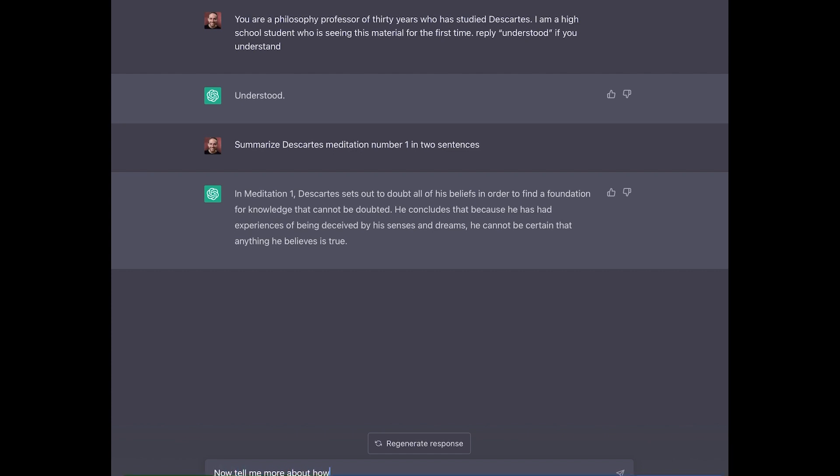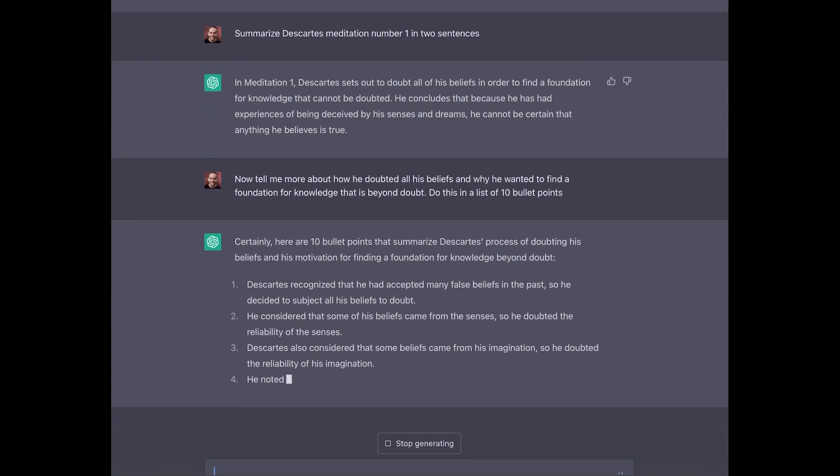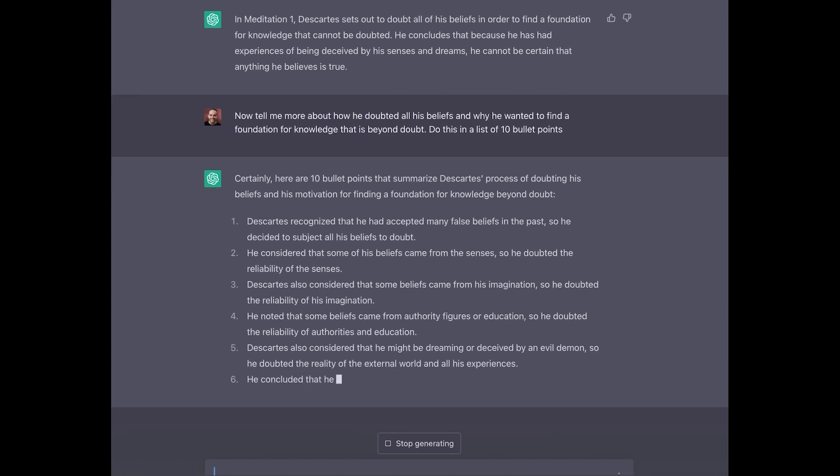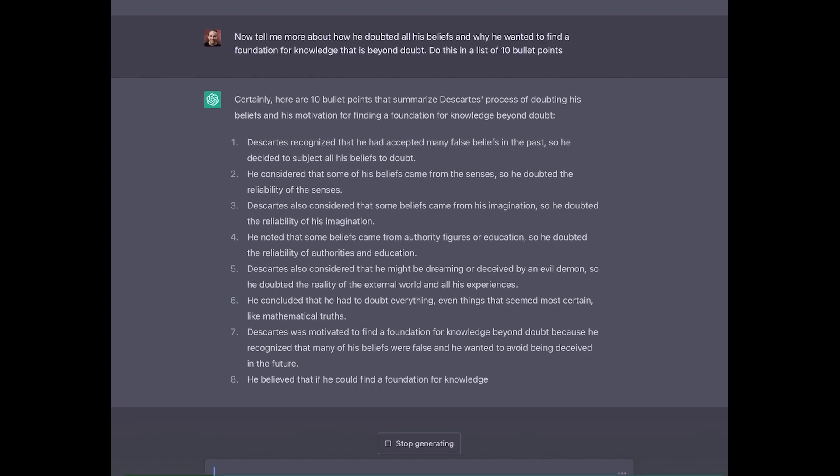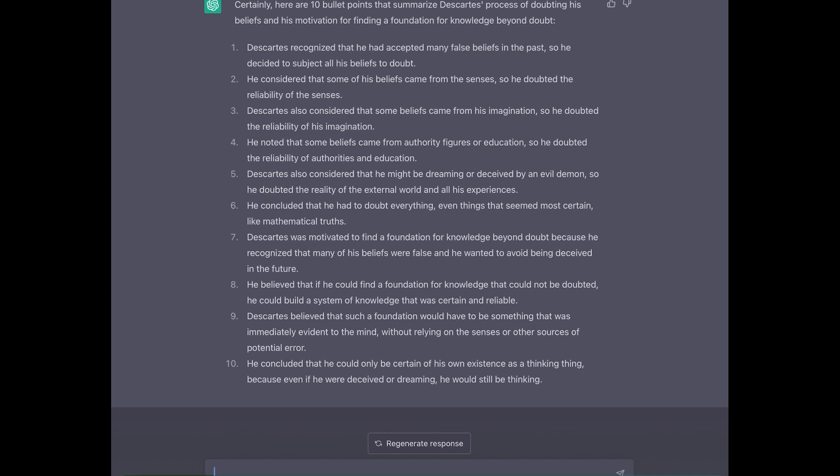So now tell me more about how he doubted all his beliefs and why he wanted to find a foundation for knowledge that is beyond doubt. And I like to do it this way. So instead of it giving you this long extended narrative, I like to say, do this in a list of, let's say, 10 bullet points. Now, it's going to give you a list in the style that you asked for. And so these are 10 bite-sized ideas in themselves that are one level down. So one additional level of detail that provides you more insight into the detail of what's going on with how it is that he doubted his beliefs and why it is that he wanted to find that foundation for knowledge. And so this is perfect.